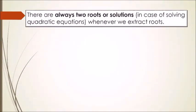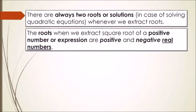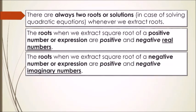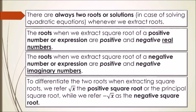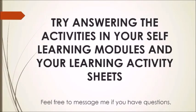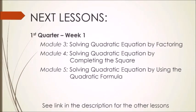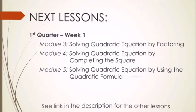To sum it up, there are always two roots or solutions when solving quadratic equations by extracting roots. The roots of a positive number or expression are positive and negative real numbers, while the roots of a negative number or expression are positive and negative imaginary numbers. The positive square root is called the principal square root. Try answering the activities in your self-learning modules and learning activity sheets, and feel free to message me if you have questions. For our next lessons, see the link in the description. Thank you!